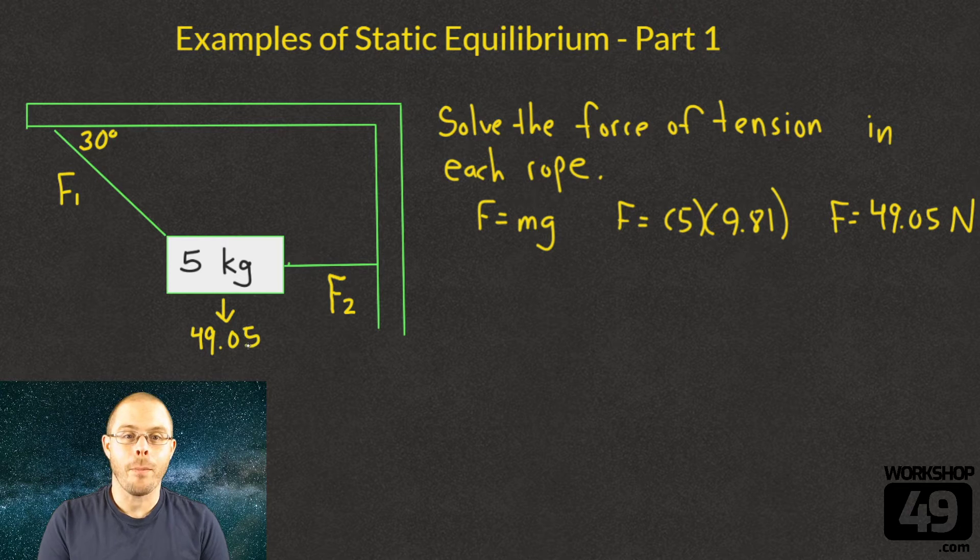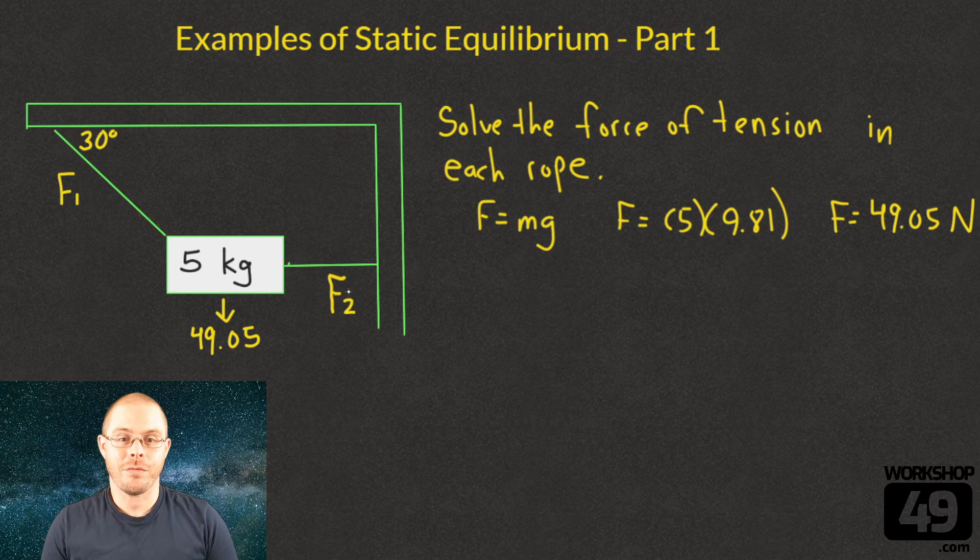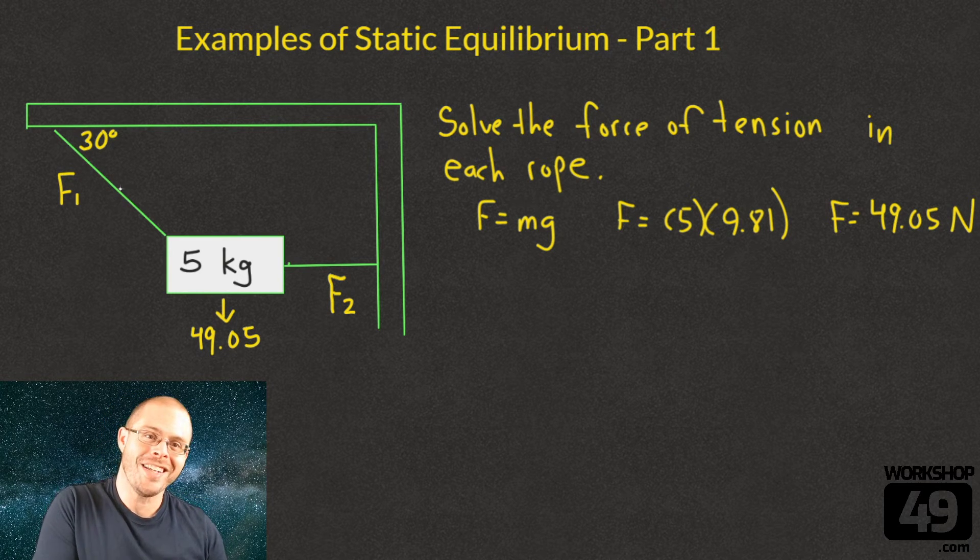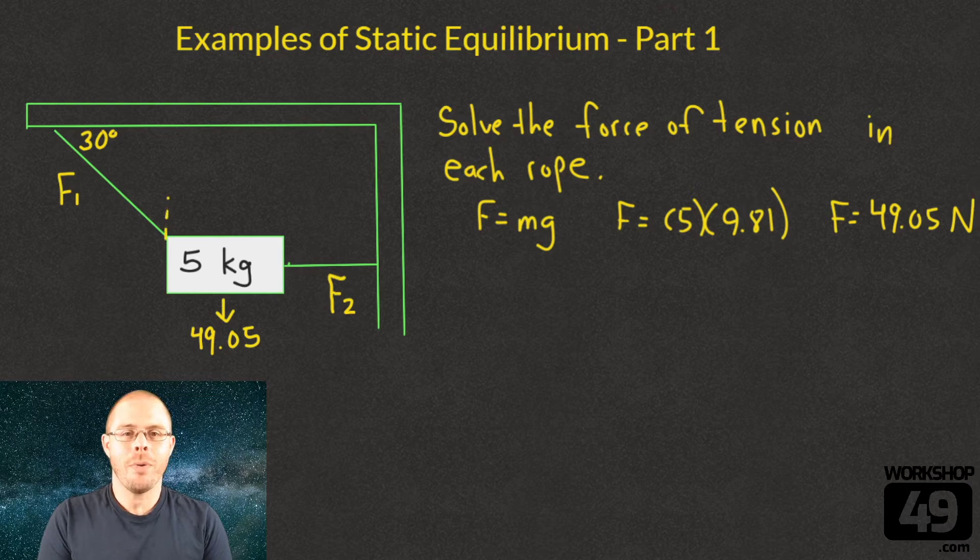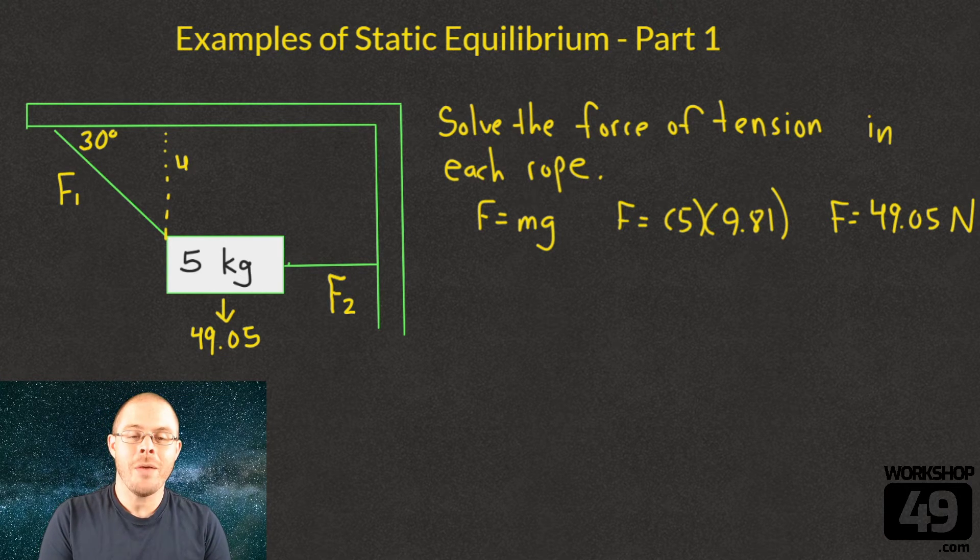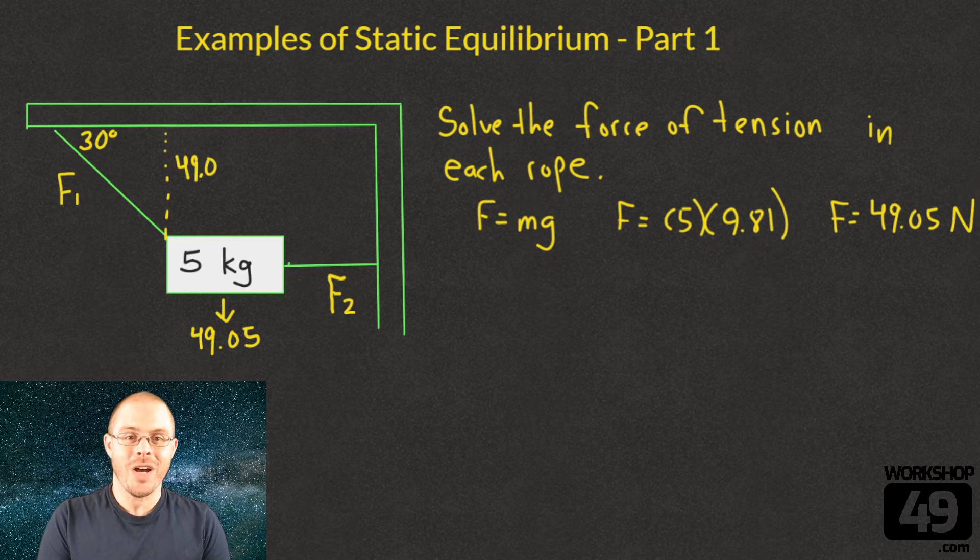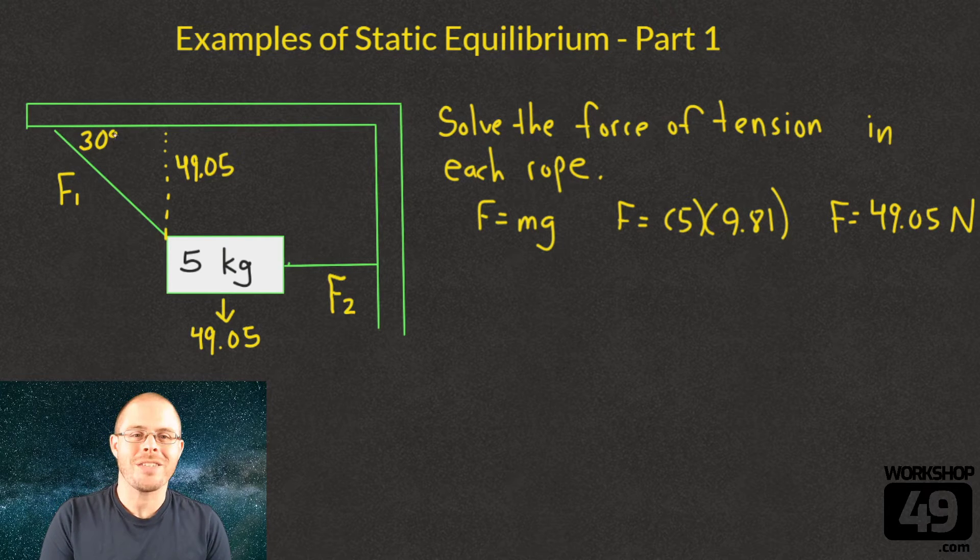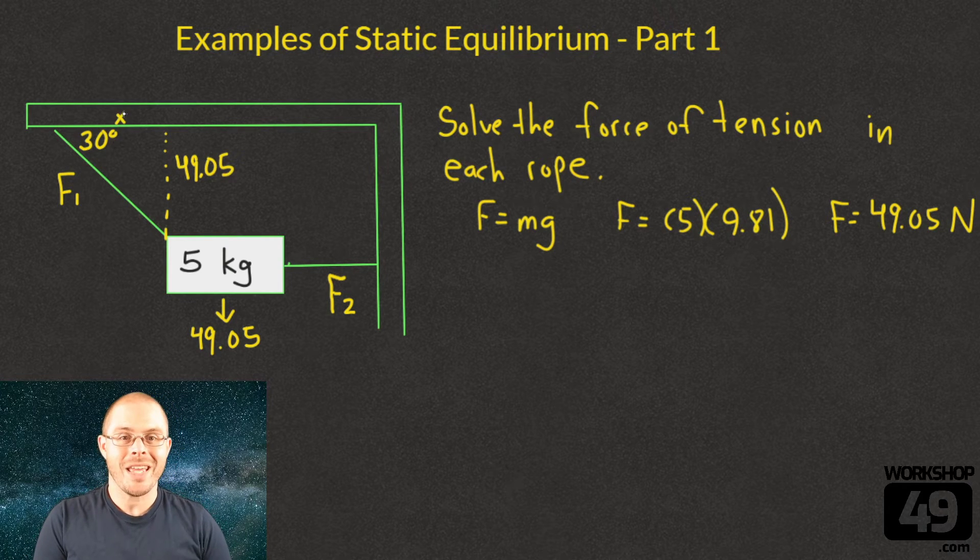One of the ropes must be pulling up with an equal amount, and because F2 is pulling directly to the side, that means that the y component of F1 must be 49.05. That's the only way that works. Up and down is cancelled.